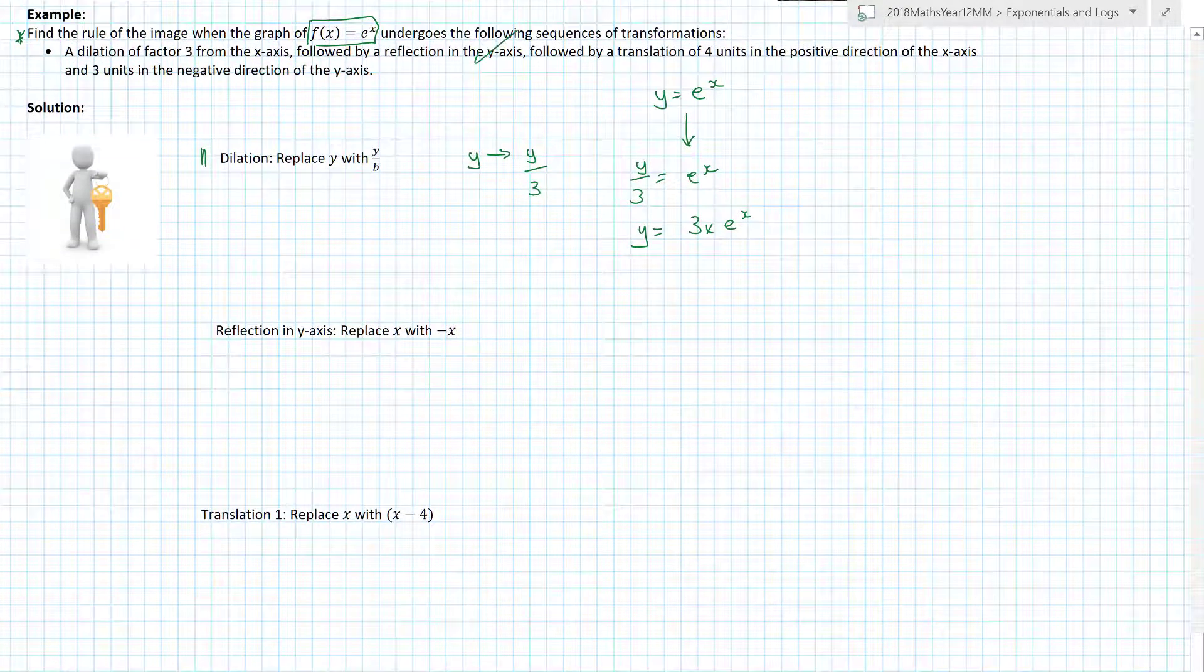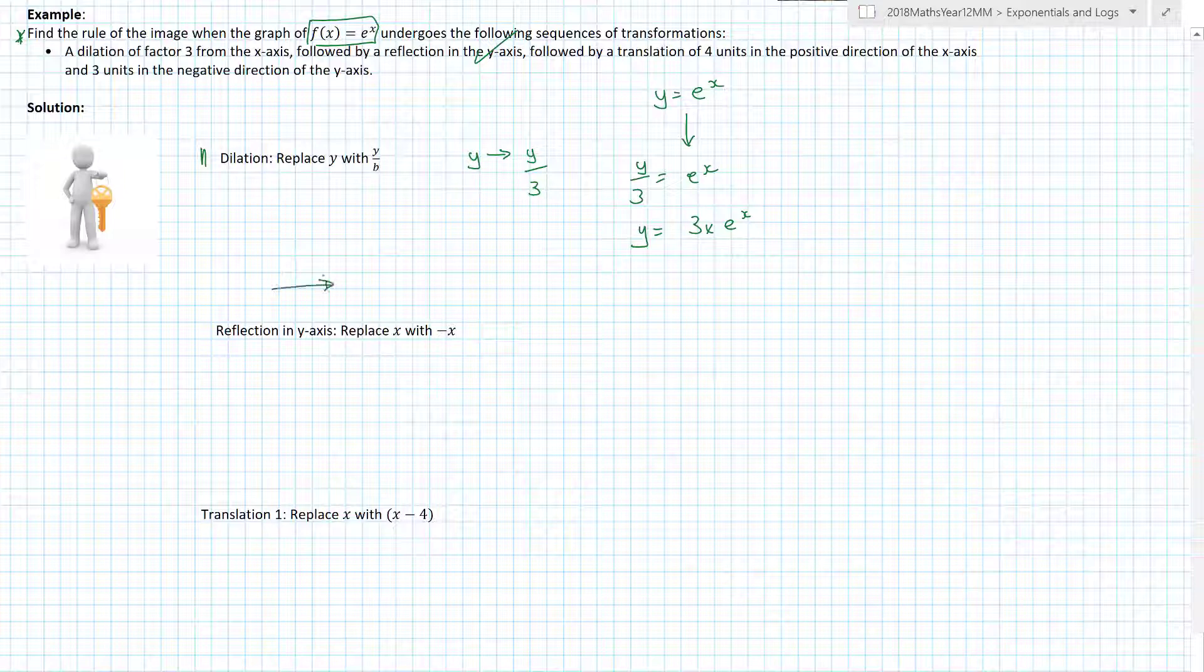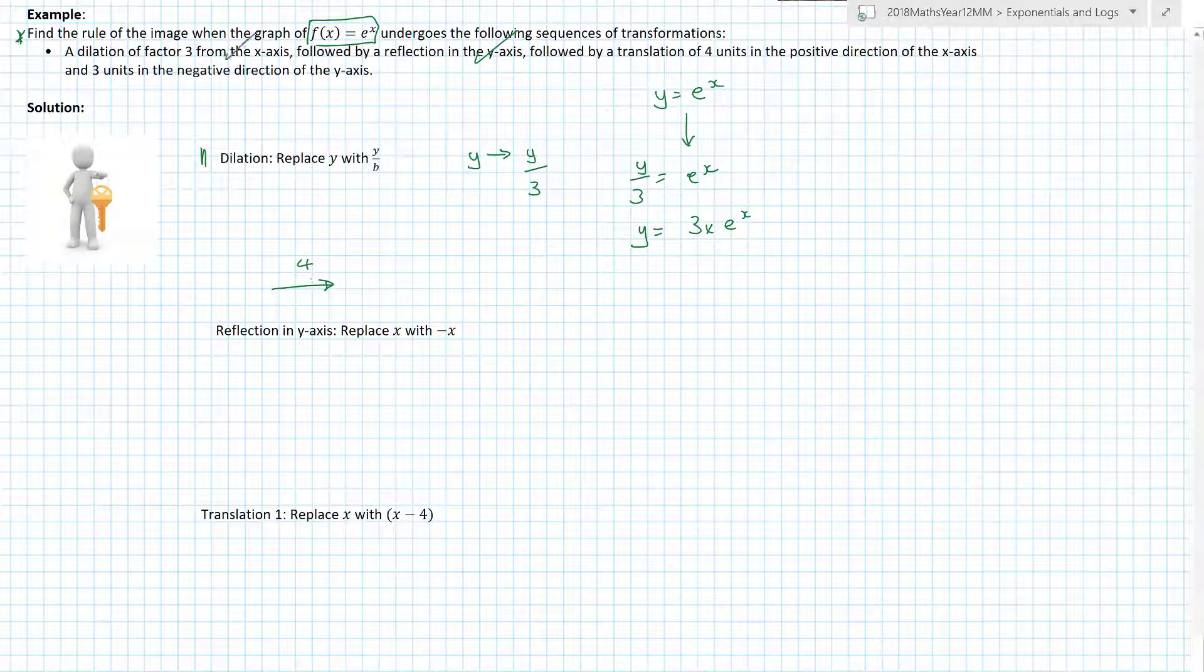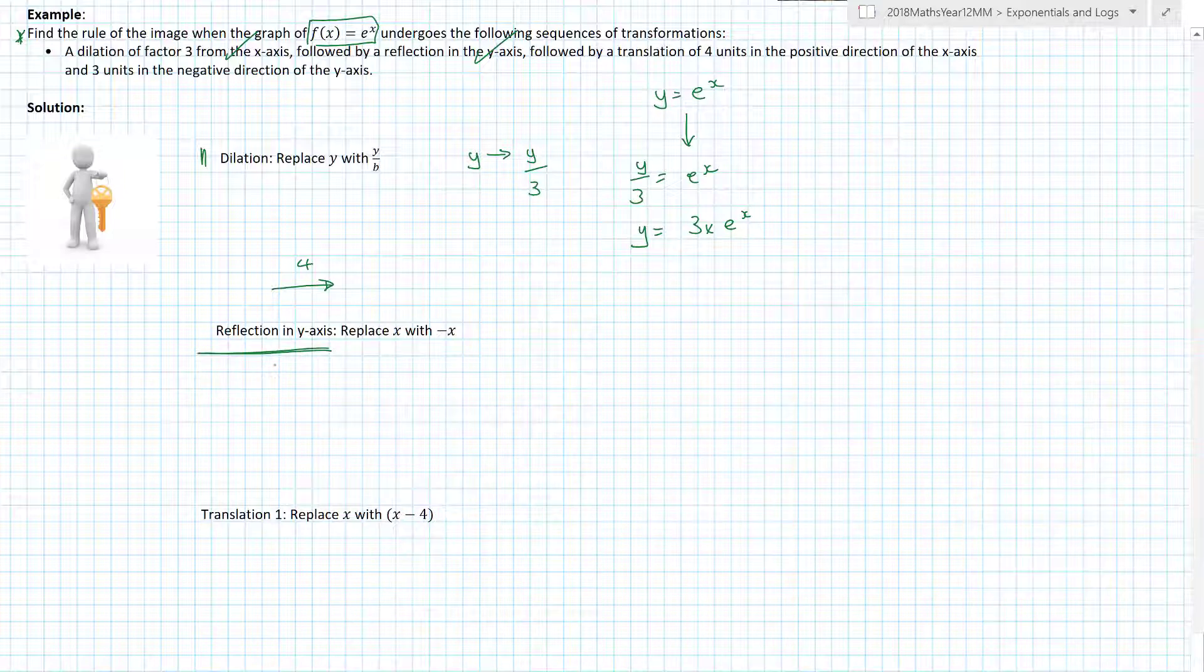Followed by a translation of four units in the positive direction. So I'm going to go with that four units. Followed by - oh sorry, I've just missed one, I've ticked one. Followed by reflection in the y-axis. So again, my shortcut says when you're reflecting in the y-axis, replace x with -x. Okay, let's do that. So x is going to have -x everywhere. So y is equal to 3 times e^(-x). Awesome.